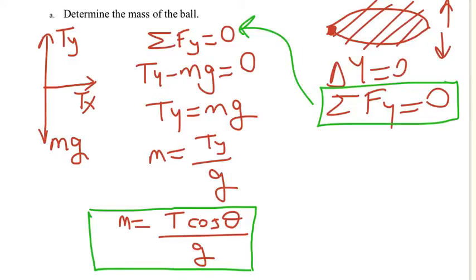You know, we always have a reference point and coordinate system. And if we take the up direction as positive and down direction as negative, then this addition is going to become Ty minus mg and that equals zero. And from there, we are going to get Ty equals mg.